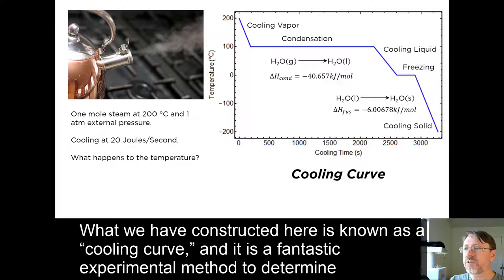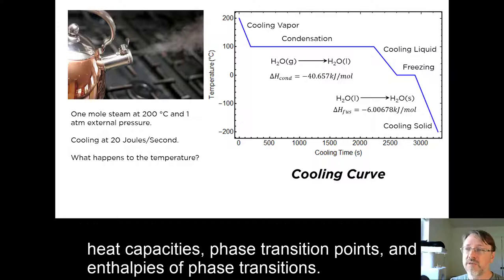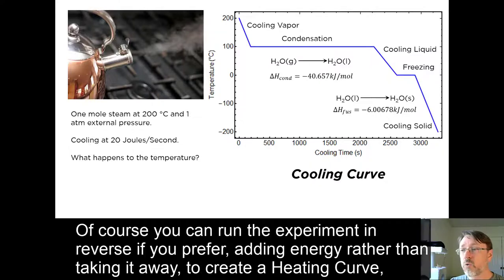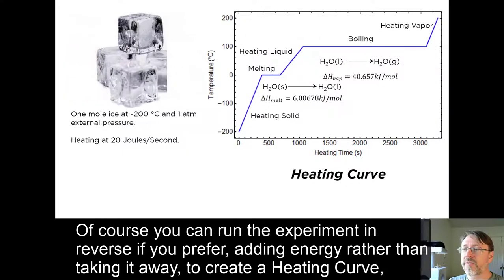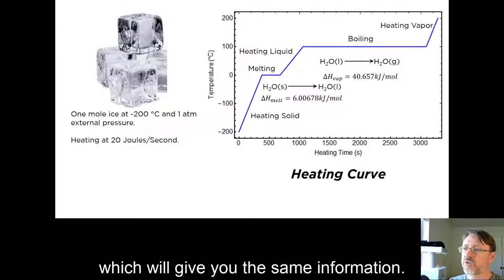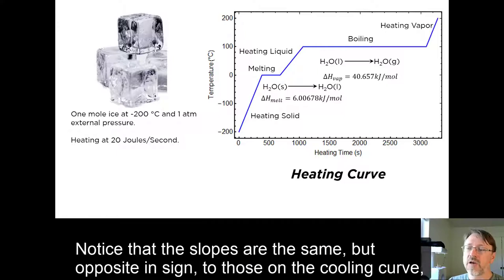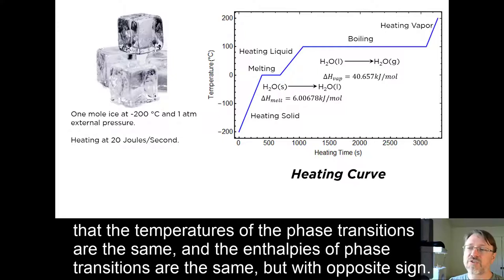What we have constructed here is known as a cooling curve, and it is a fantastic experimental method to determine heat capacities, phase transition points, and enthalpies of phase transitions. Of course, you can run the experiment in reverse, if you prefer, adding energy rather than taking it away to create a heating curve, which will give you the same information. Notice that the slopes are the same, but opposite in sign, to those on the cooling curve. That the temperatures of the phase transitions are the same, and the enthalpies of phase transitions are the same, but with the opposite sign.